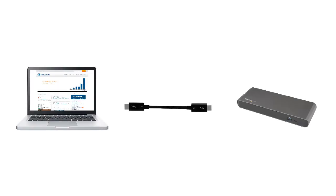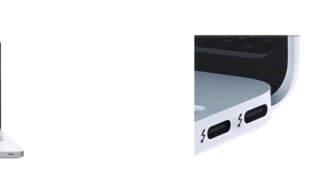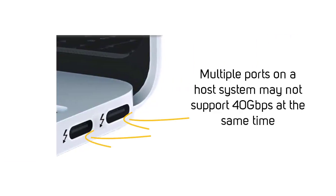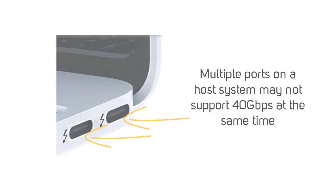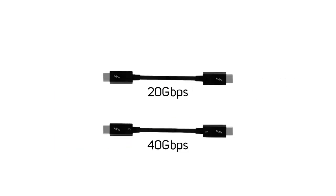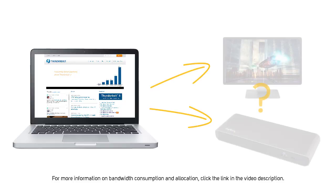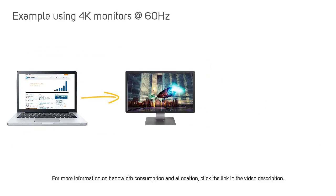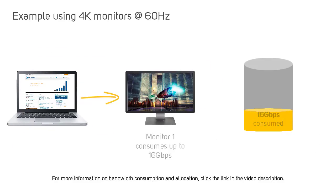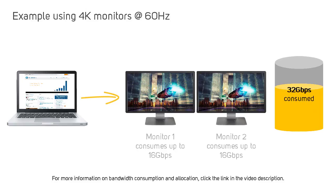Thunderbolt 3 can support up to 40 gigabits per second of total bandwidth. However, this must be supported by each component in your setup. If a Thunderbolt 3 host system, such as a laptop, has multiple Thunderbolt 3 ports, it might not support 40 gigabits per second on each port at the same time. If you need 40 gigabits per second, make sure your cable is capable of this. Data transmission speeds are dependent on the other components you are using in your setup. For example, when you output to a display, some of the 40 gigabits per second bandwidth is consumed. Keep this in mind if you experience a reduced transfer speed.